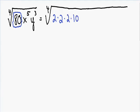I'm going to continue this process with the ten. The ten can be rewritten as two times five. So I'm going to erase the ten and rewrite that as two times five.